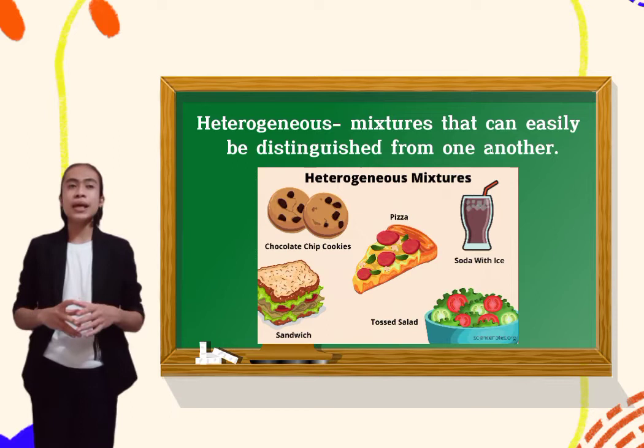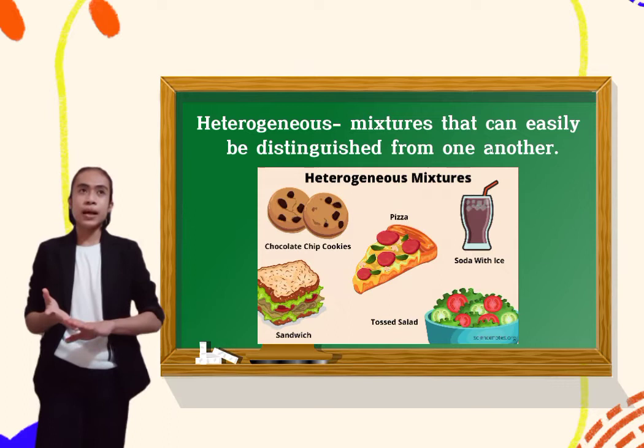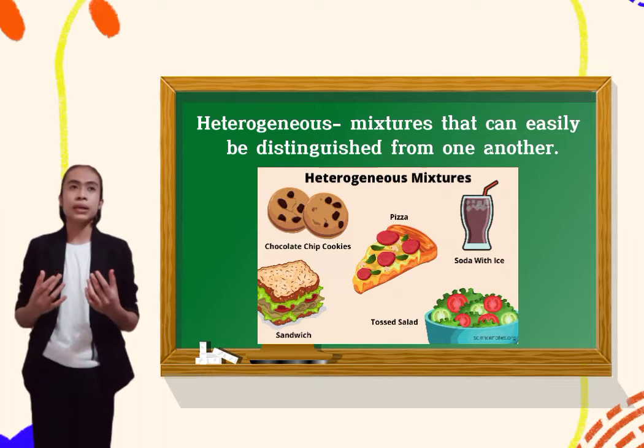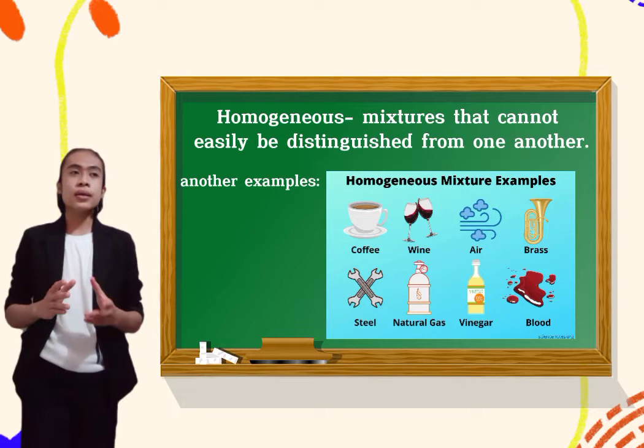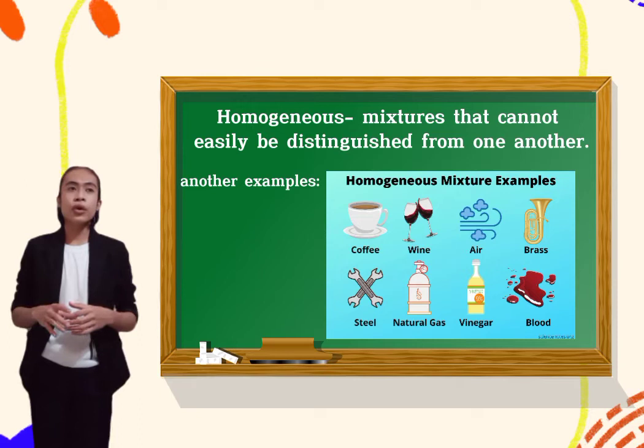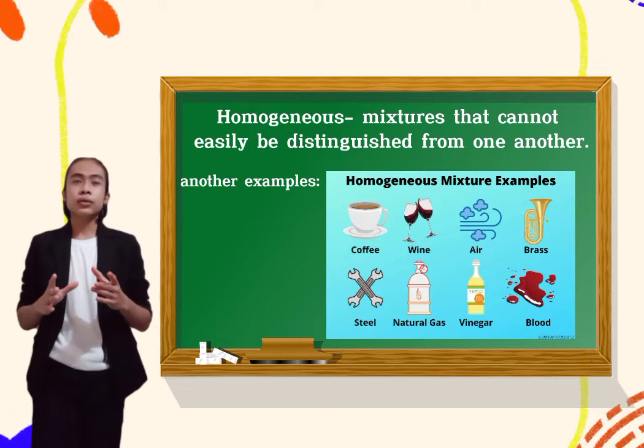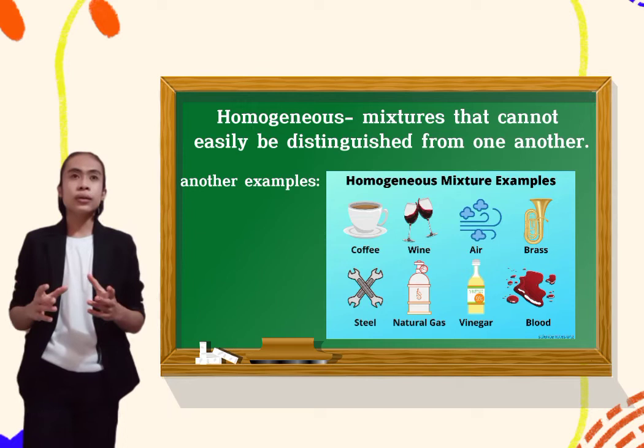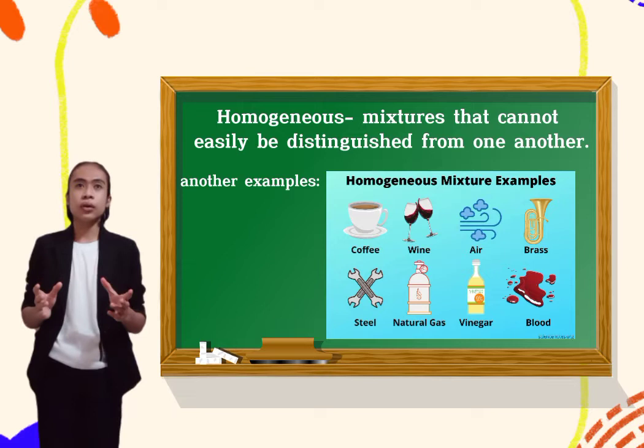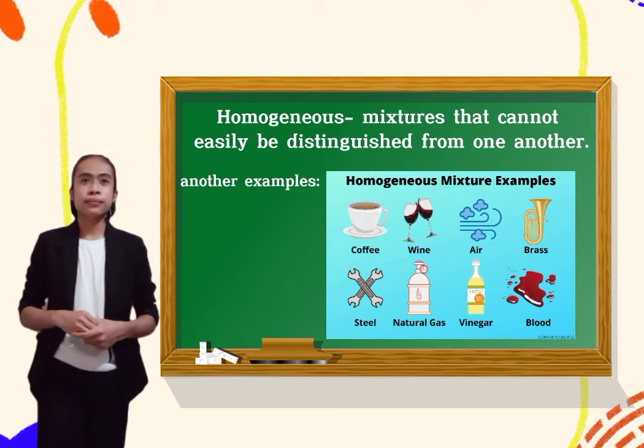When we say heterogeneous, this mixture can be easily distinguished. For example, halo-halo, pizza, where the ingredients can be easily distinguished with our eyes. And when we say homogeneous, it is the mixture that cannot be easily distinguished. For example, coffee with milk, when water and salt are combined, it's difficult to distinguish where the salt is. Okay, that's what we call homogeneous.